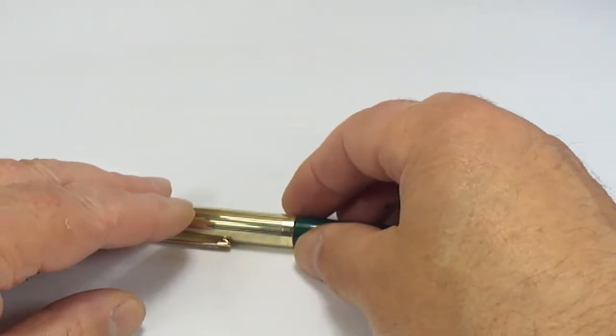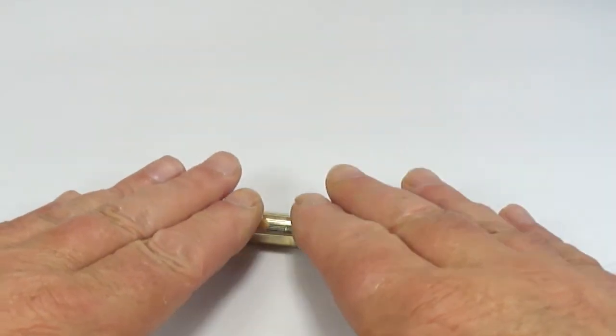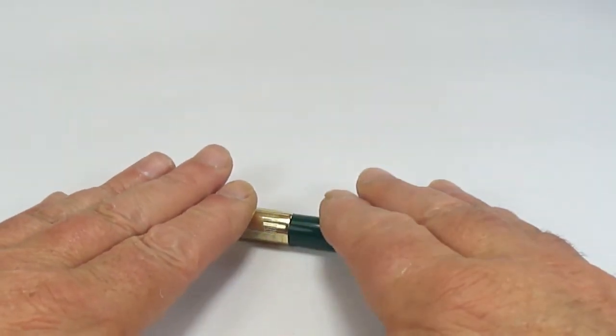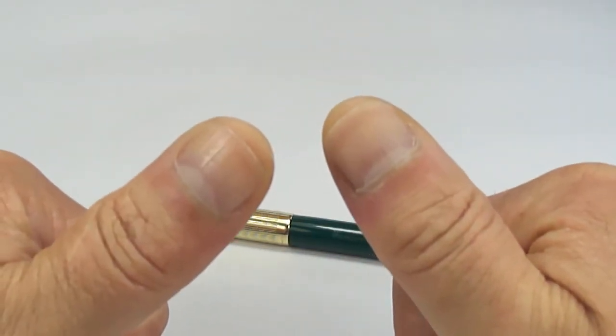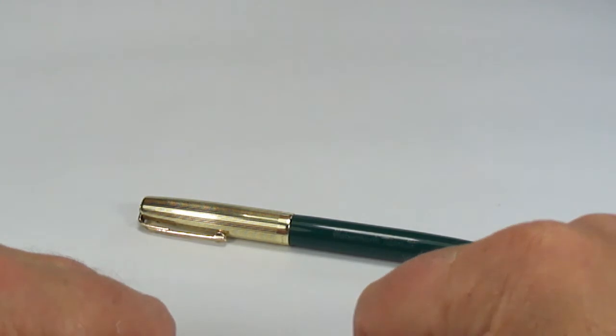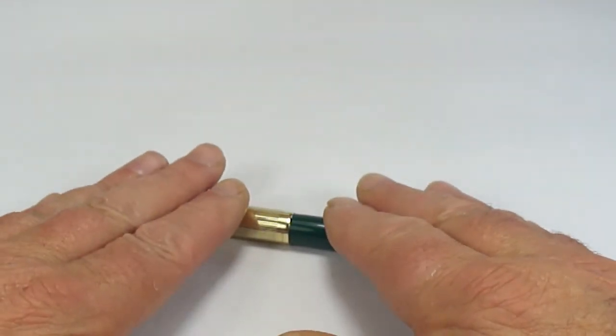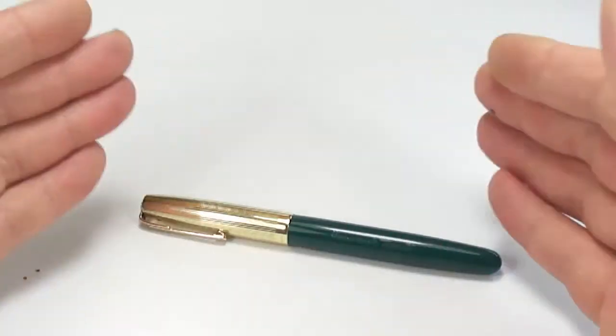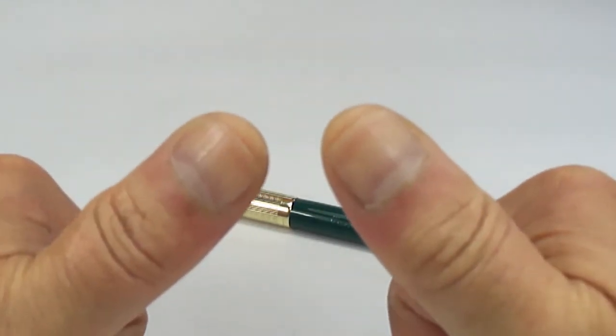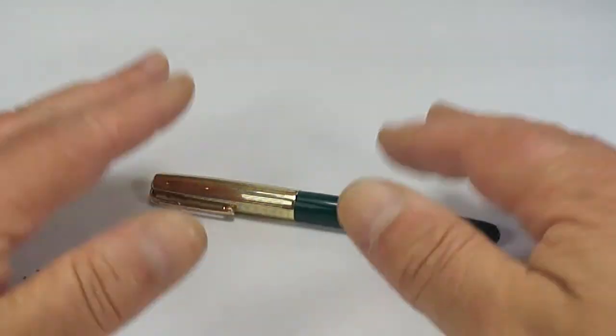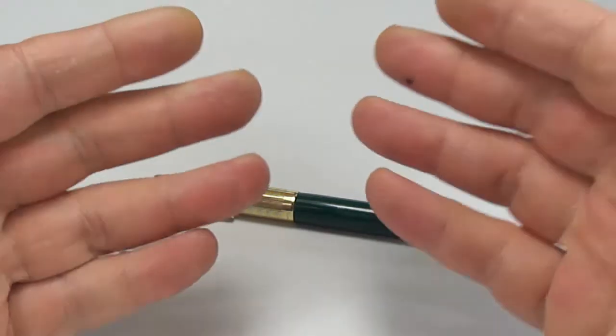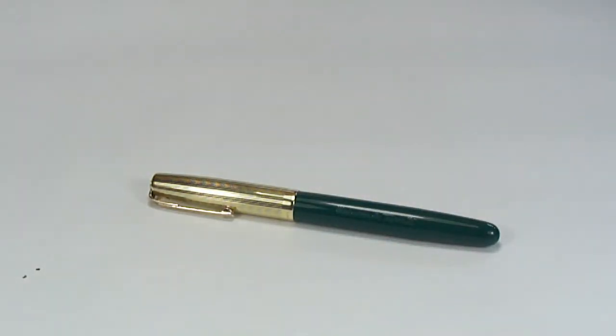So, there we have it. A gorgeous Waterman's taperite fountain pen made in England, in gorgeous green. Lovely pen, Tony. So, it'll be coming back to you hopefully later on today. But, I hope you people enjoyed looking at this pen. As much as I enjoy showing them to you, leave a comment below, subscribe, and if you possibly can, why not support my work. But, for now, I'll just say bye-bye, for now.